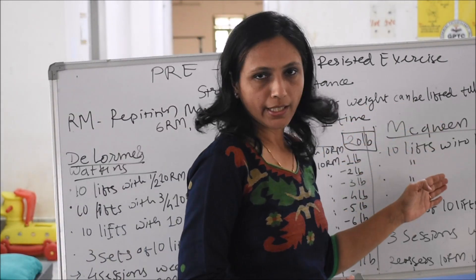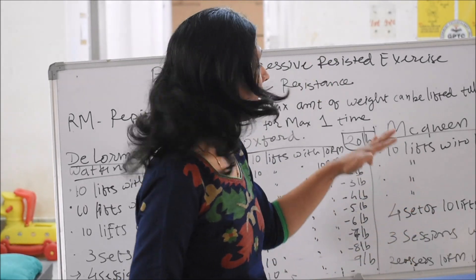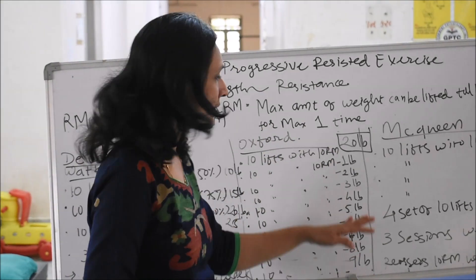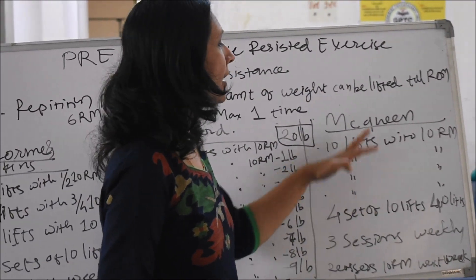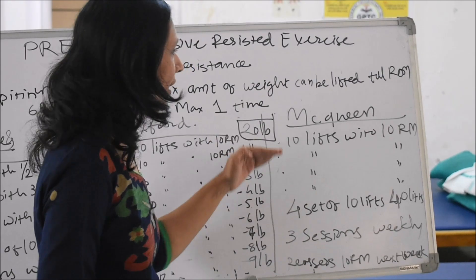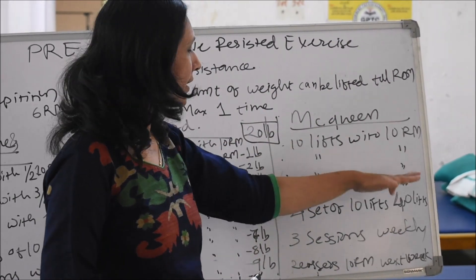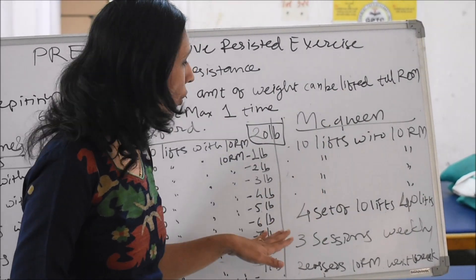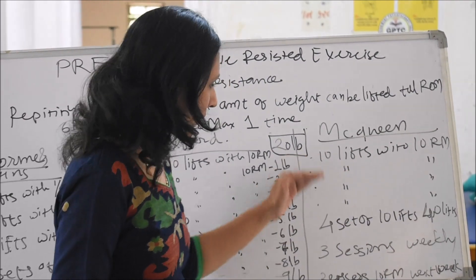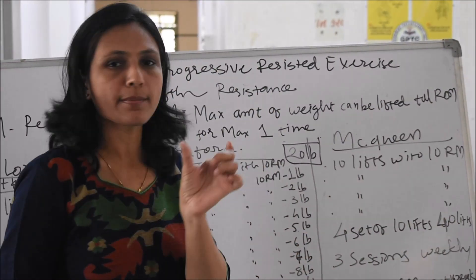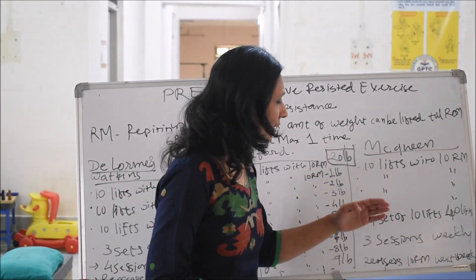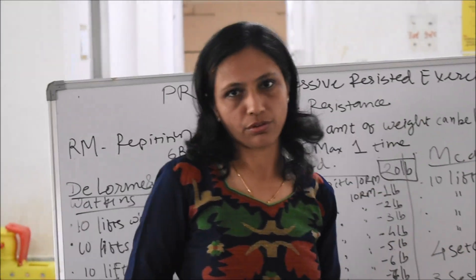Now the MacQueen technique — the third technique. Here the resistance is kept constant throughout all sets. In the previous techniques resistance increased or decreased; here all lifts are done at the same 10RM. So: 10 lifts with 10RM, again 10 lifts with 10RM, again 10 lifts with 10RM, again 10 lifts with 10RM — 4 sets of 10 repetitions, making 40 total repetitions at the same weight. This is one session. Three sessions per week are performed, and the 10RM is reassessed in the next week.